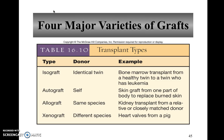They grade the match on a scale of 1 to 10 — the higher the number, the better the match, and the less likely that person is going to need a lot of immunosuppressive drugs to keep their immune system from rejecting the organ.